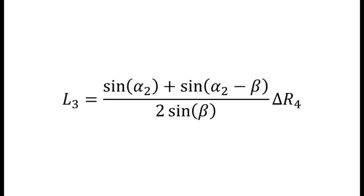Similarly, link 3 can be found using this equation: L3 equals sine of alpha 2 plus sine of alpha 2 minus beta over 2 sine of beta times delta R4.